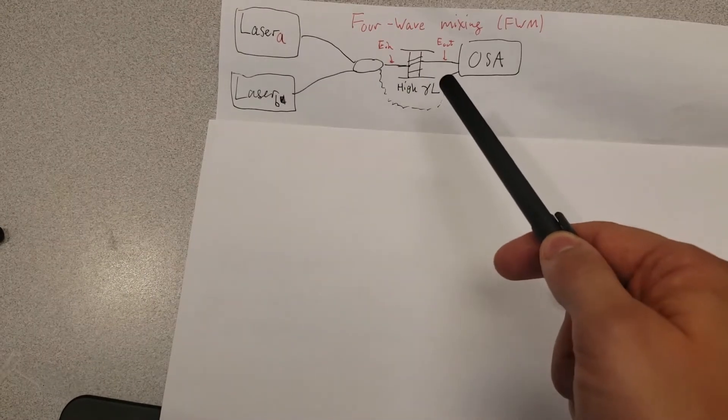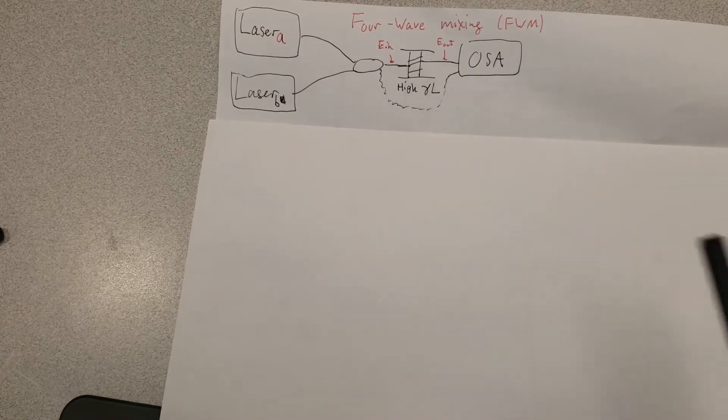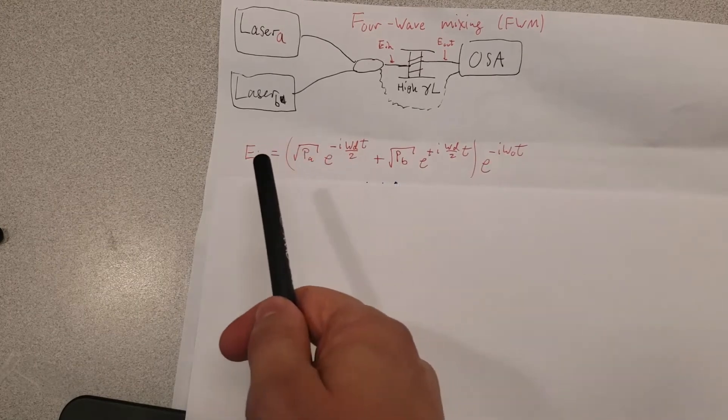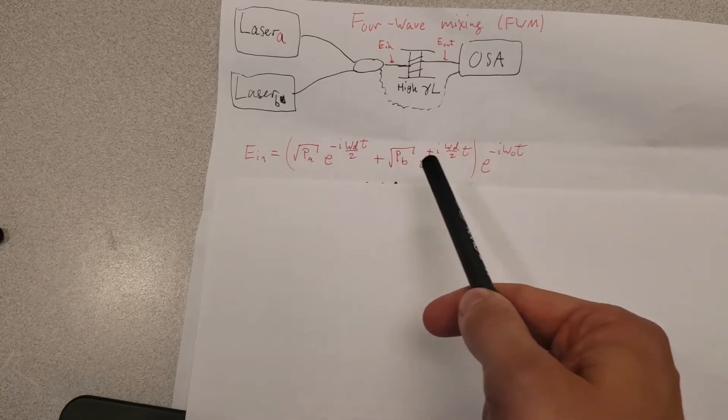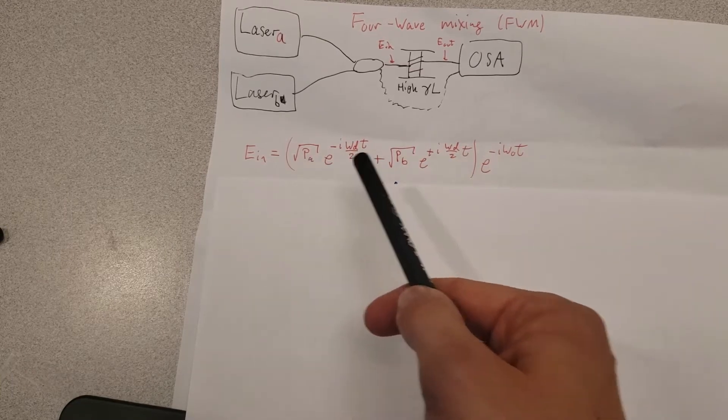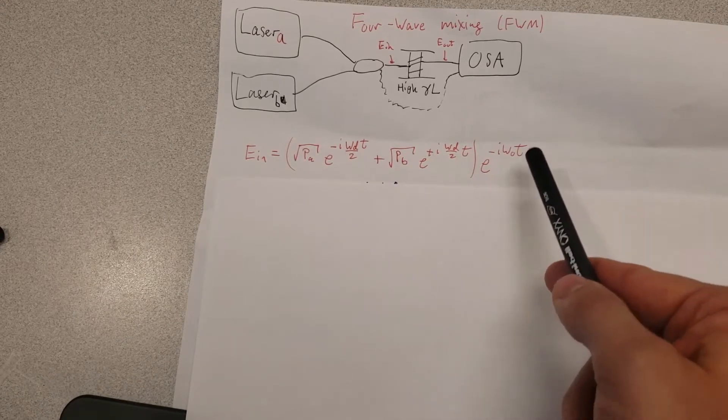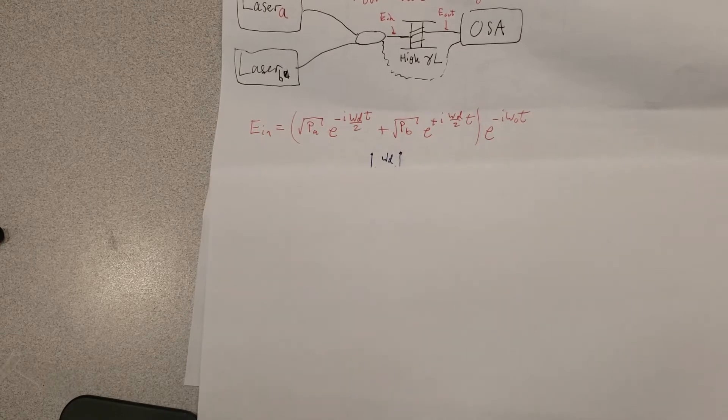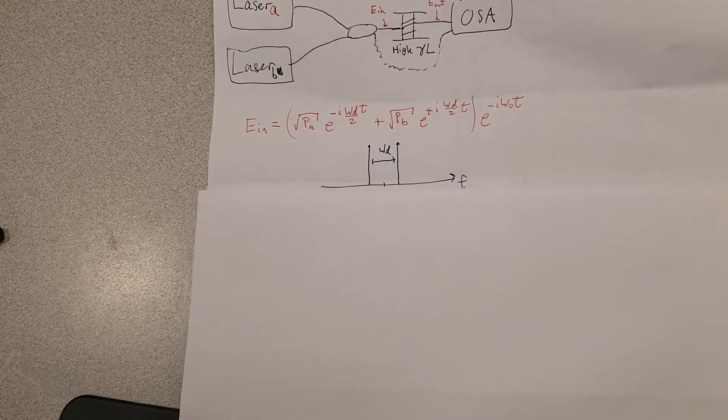When we have these two distinct frequencies going in, how is the input field going to determine what the output field looks like? We can write the input field like this: we have the first laser here and the second laser here where Pa and Pb are the powers of the two lasers. Notice that we essentially expanded around a central frequency and that these two lasers have a frequency difference of omega d. So that's what I've tried to represent here in this diagram.